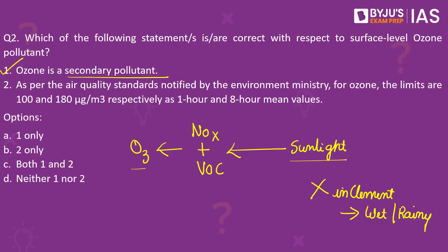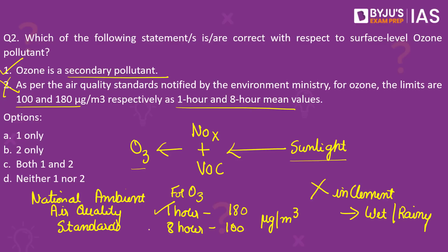Moving on to the second statement — it is very difficult to remember and recollect such numbers with respect to different pollutants. However, a closer analysis of this statement reveals a useful tip: it prescribes 100 and 180 for 1-hour and 8-hour mean values respectively. For shorter time frames like 1 hour, you would have higher values, and for longer 8-hour mean values, you would have lower. So even without knowing the exact numbers, this logic tells you the statement is wrong. Going by the National Ambient Air Quality Standards, the answer to this question would be option A — statement 1 only.